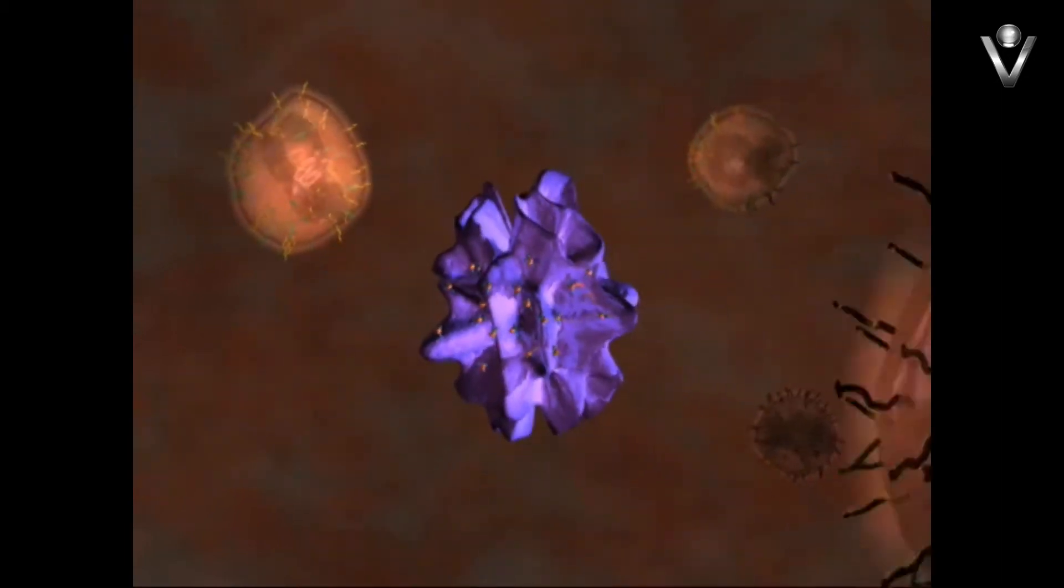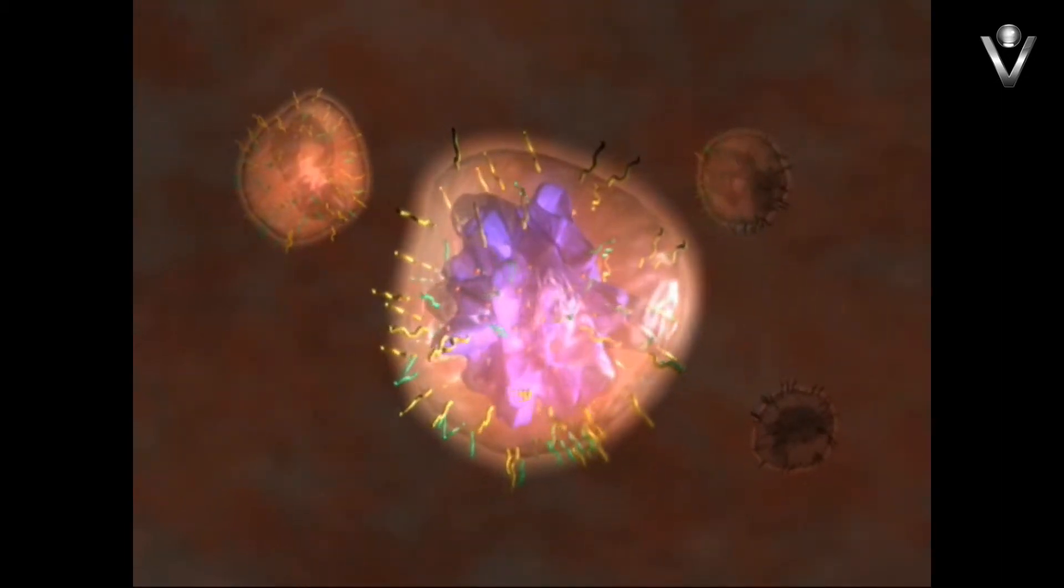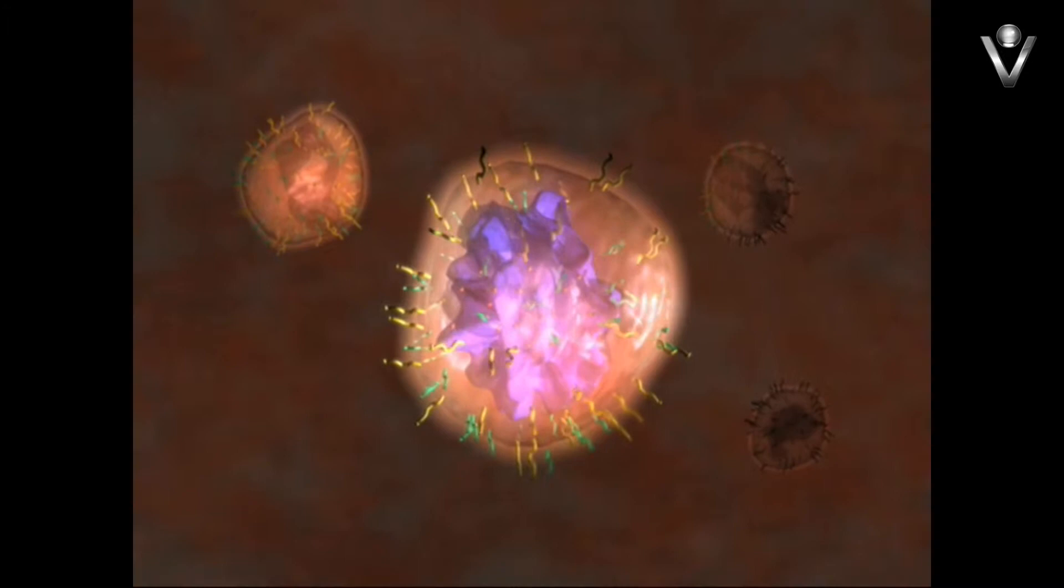When antibodies bind to cancer cells and attract complement, the primed neutrophils now see them as non-self and begin killing them as if they were yeast.